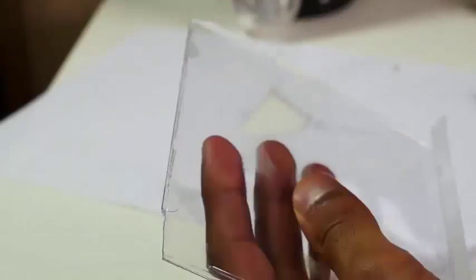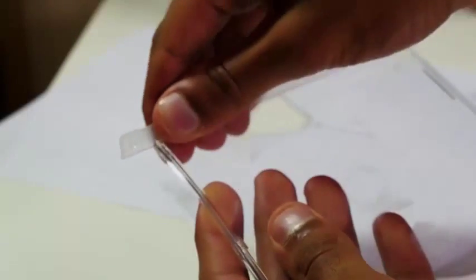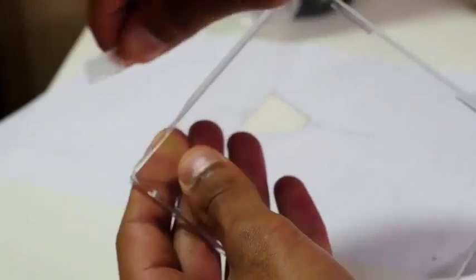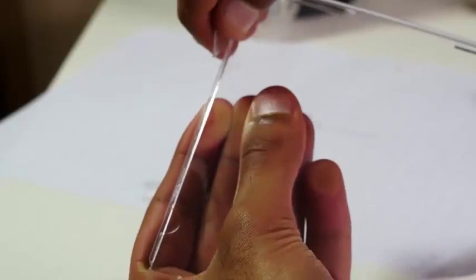You get your little paper template and then just before we start cutting, take off the sides of the CD case because they're just going to get in the way. You don't need them at all.